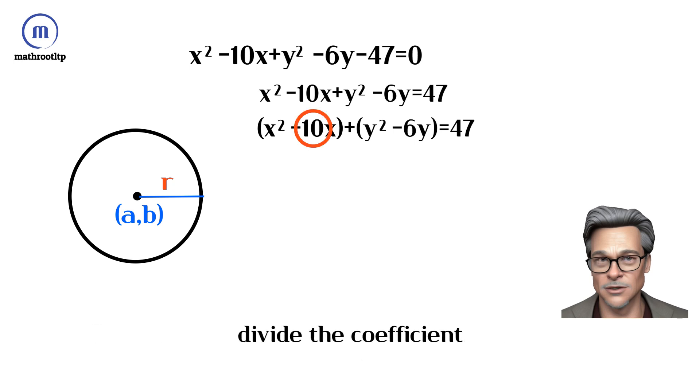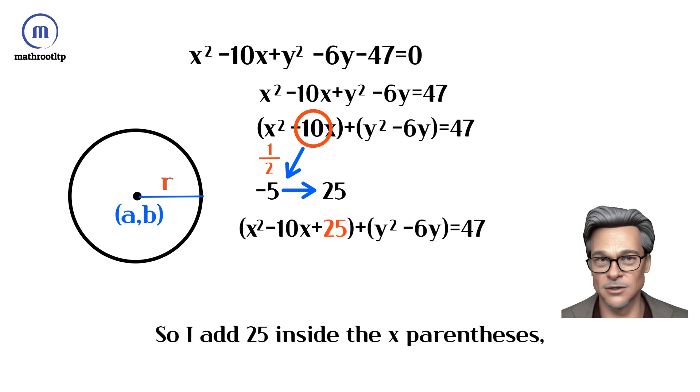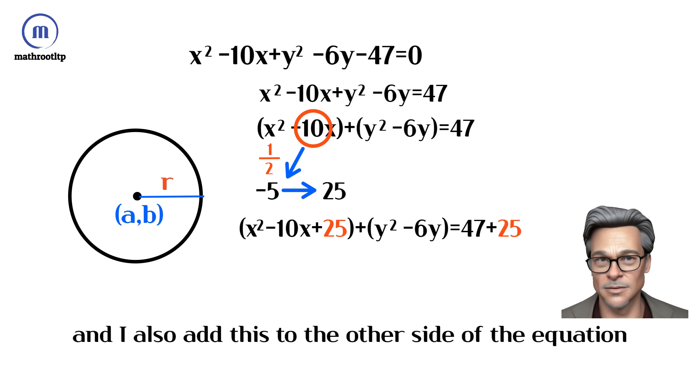Then square negative 5. So I add 25 inside the x parentheses, and I also add this to the other side of the equation.